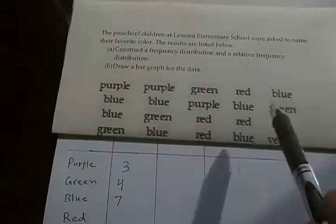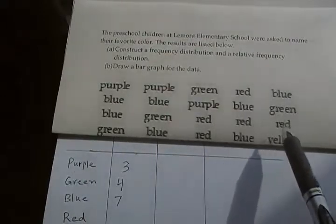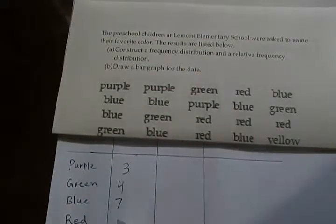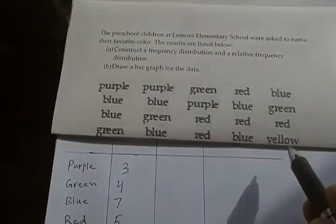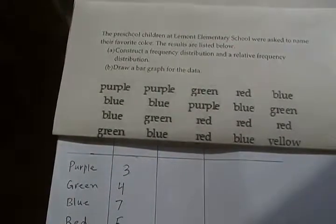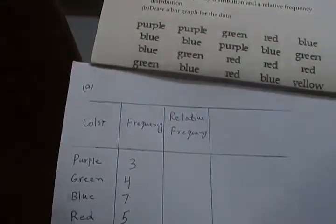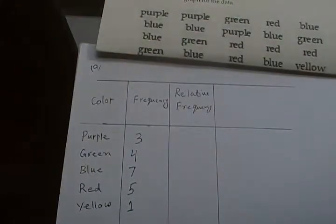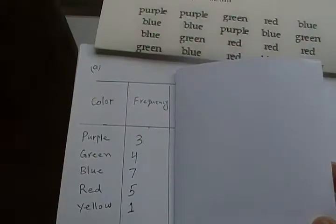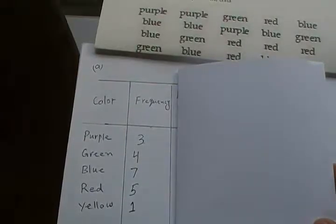Red: 1, 2, 3, 4, 5 - so 5 times. And then yellow appears 1 time, I'll write 1 here. This table up to this point is your frequency distribution table - each color and the number of times it appears in the data. This is what it means by frequency distribution.